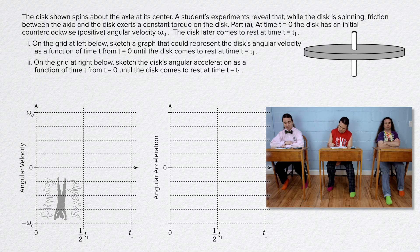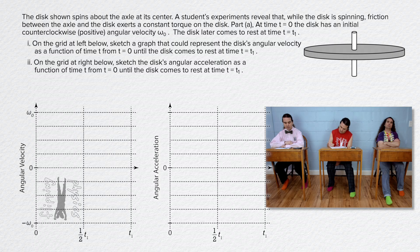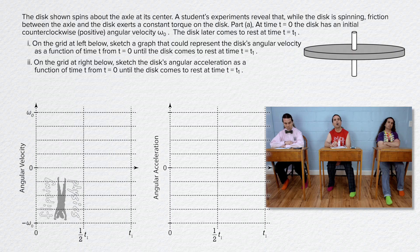The disk shown spins about the axle at its center. A student's experiments reveal that while the disk is spinning, friction between the axle and the disk exerts a constant torque on the disk. At time t equals zero, the disk has an initial counterclockwise or positive angular velocity omega 0. The disk later comes to rest at time t equals t1.